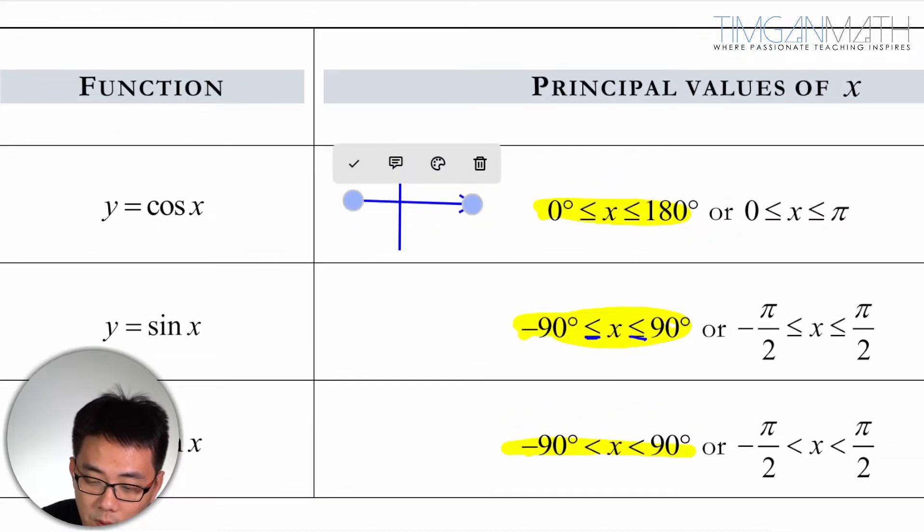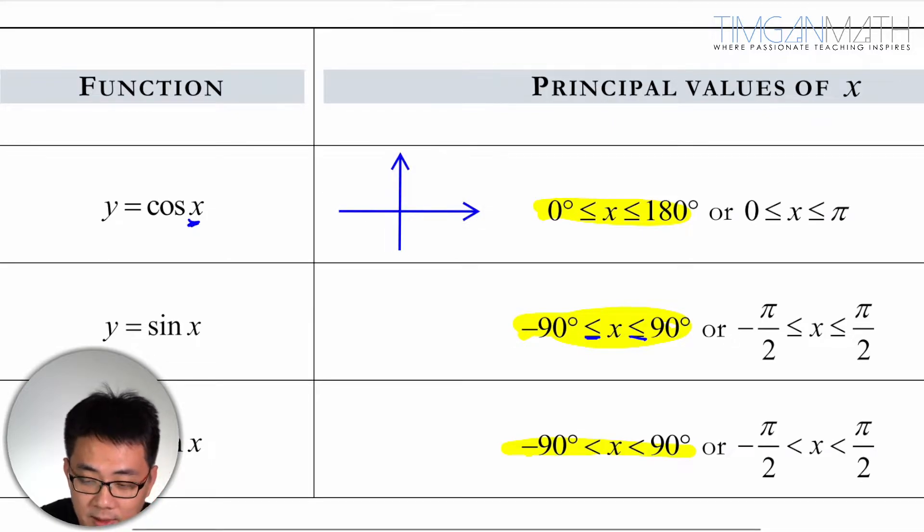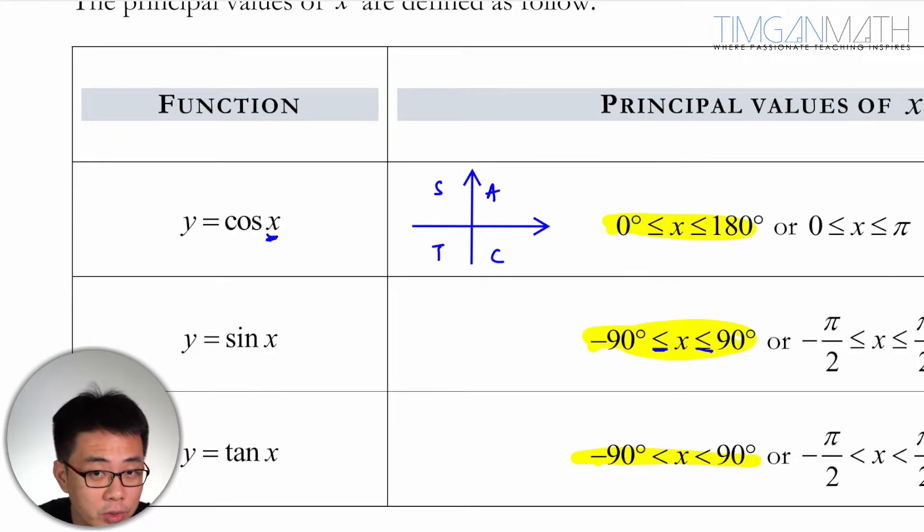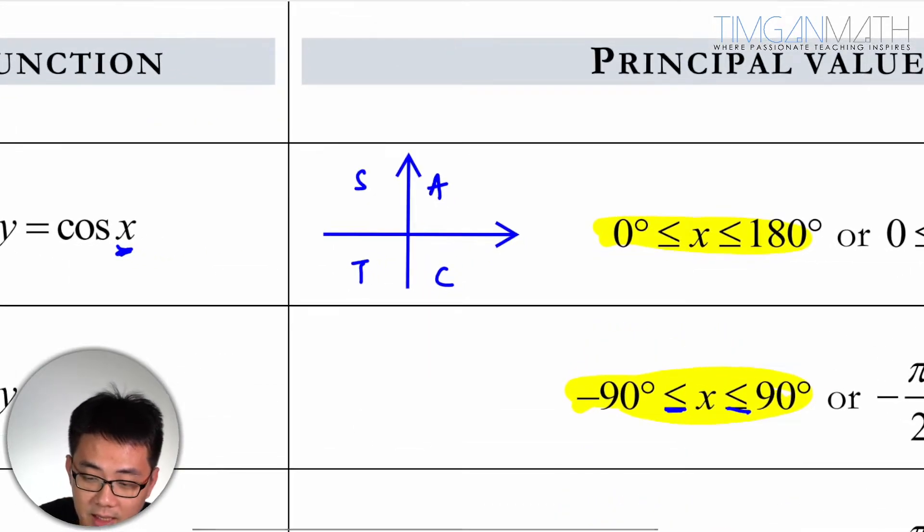So we want to, when we decide our principal value for x here, we just want a positive and negative portion for that trig ratio. So for example, in this case here,